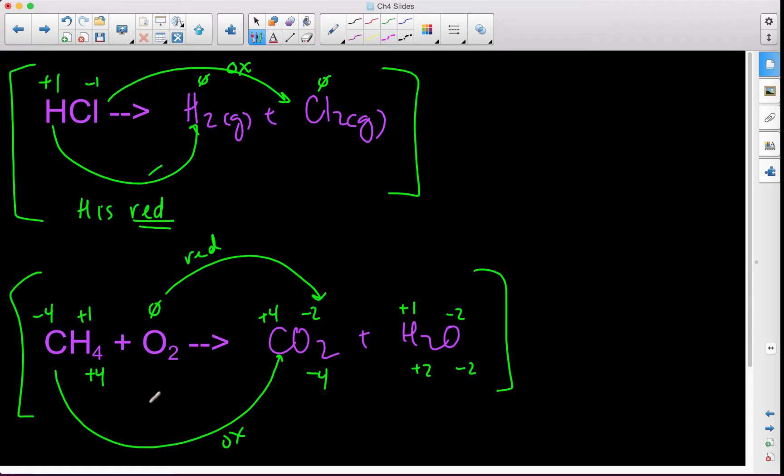And in general, when we have elemental things on either side, usually that's a big clue that we have a redox happening. Because elemental things are zero, and those are the only things that are zero, so that's usually a big clue that what we're looking at is a redox process. Very good.